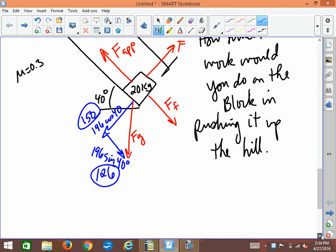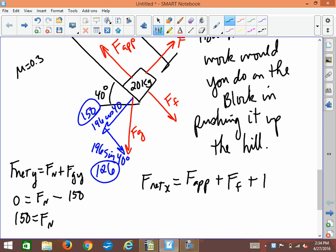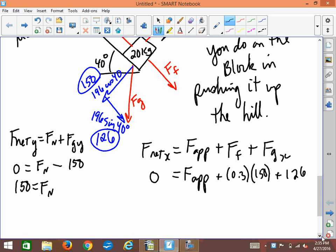Then we go ahead and we do all of our F net stuff. Right? So we do F net Y, which is F N plus F G Y, zero, F N minus 150. So 150 is the normal force. You got that far? Then we do F net X, and it would be the force applied up the hill, plus the friction, plus the gravity component X. And again, if you're going to push up the hill at a constant speed, that'll be zero. So this is F applied. Force of friction is positive, and it's going to be a mu, 0.3, times the F N, 150. And this is a positive, and it's going to be 126. So we work that out. This is 45.